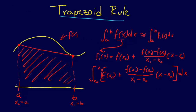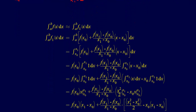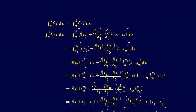We'll go through this using the typed version. The integral from A to B of f(x) dx is approximately equal to the integral using f1, the first order approximation: f(x0) plus f(x1) minus f(x0) over x1 minus x0, times x minus x0, dx. The limits are x0 to x1 because a equals x0 and b equals x1.